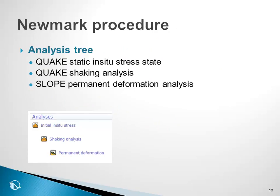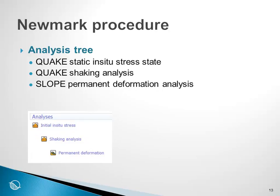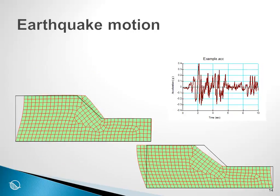Here is the analysis tree for a Newmark analysis in GeoStudio. The first thing to do is to establish the in-situ stress state — we can do that either with QUAKE or with SIGMA, but we have to know the stress state in the ground before the shaking starts. The second analysis is a QUAKE analysis to perform the shaking. When the shaking analysis is over, the results are taken into SLOPE, where we use the QUAKE results to compute the permanent deformation. The key piece of information required in QUAKE for this type of analysis is a time history record of the earthquake — a record of acceleration versus time.